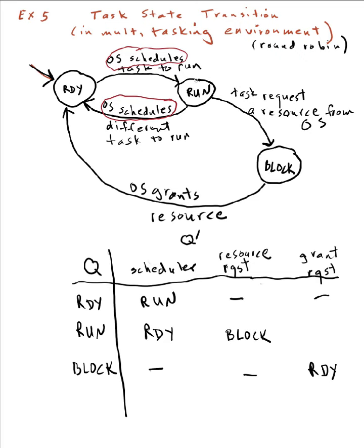This is my last example demonstrating the general usefulness of state transitions for understanding different things in computer science. It's very useful for a number of different things, and in fact if you go back and look at your flowcharts and rethink what's going on in that flowchart, it is actually very close to a state transition diagram itself. That's the end of the introduction to state transition diagrams.